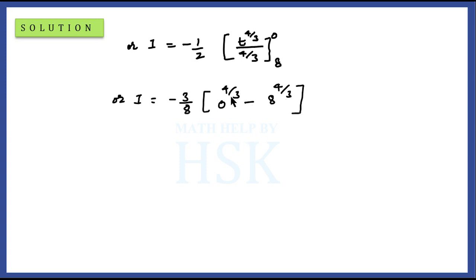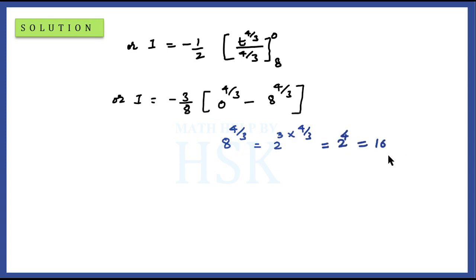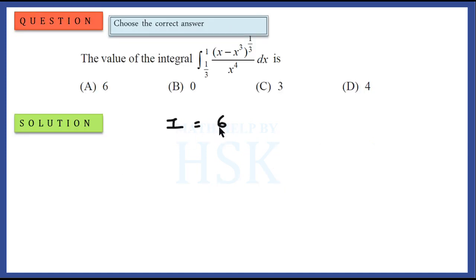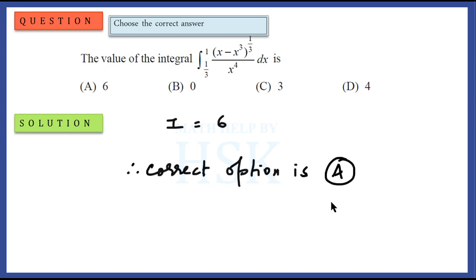Now, 0 to the power of 4 by 3 equals 0. For 8 to the power of 4 by 3: we write 8 as 2-cubed, so 8 to the power of 4 by 3 equals 2 to the power of 3 times 4 by 3, the 3s cancel, giving 2 to the power of 4, which is 16. So i equals minus 3 by 8 into (0 minus 16), which gives i equals 6. Therefore the correct option is A, which is the required answer.